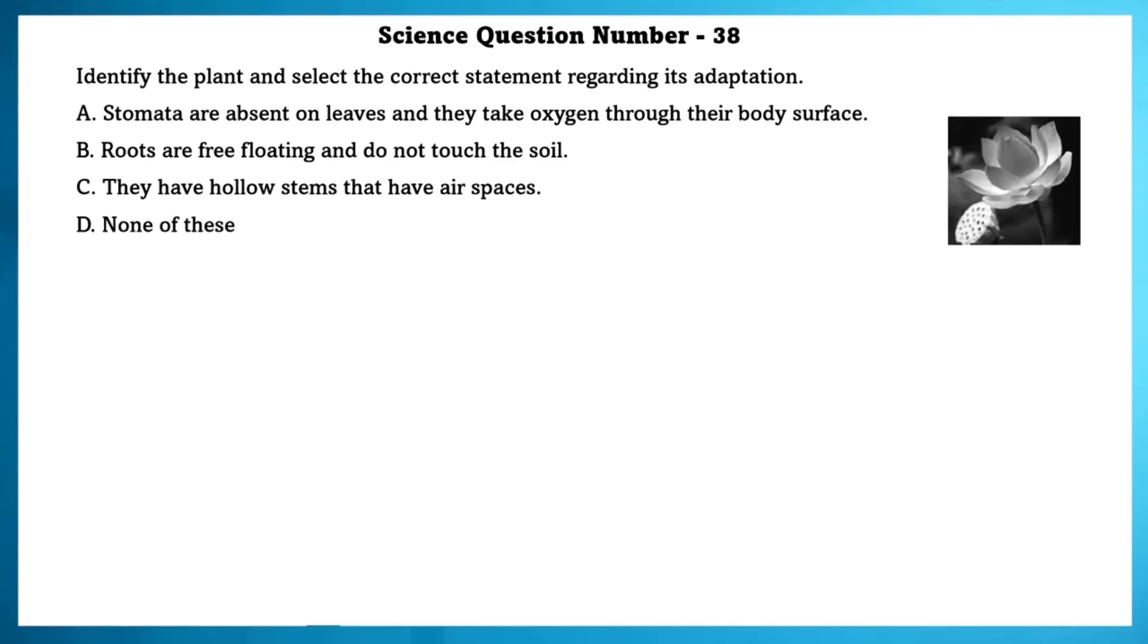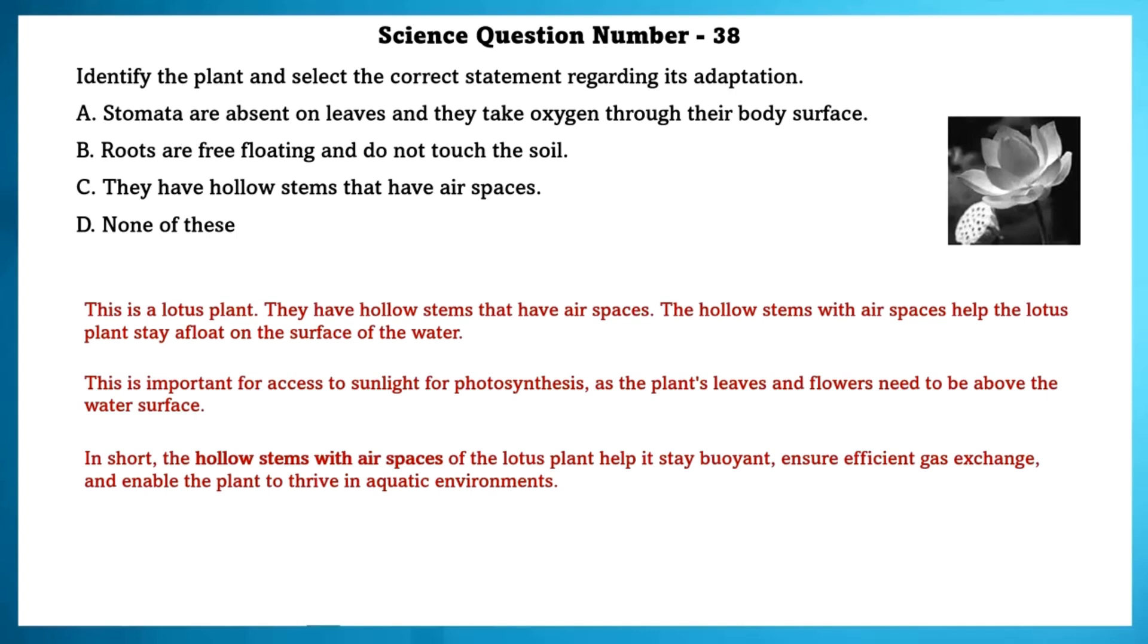Science question number 38. Identify the plant and select the correct statement regarding its adaptation. This is a lotus plant. They have hollow stems that have air spaces. The hollow stems with air spaces help the lotus plant stay afloat on the surface of water. This is important for the access to sunlight for photosynthesis, as the plant's leaves and flowers need to be above the water's surface. In short, the hollow stems with air spaces of the lotus help it to stay buoyant, ensuring efficient gas exchange, and enable the plant to thrive in aquatic environments. From this, we can see that the correct statement is that they have hollow stems that have air spaces.